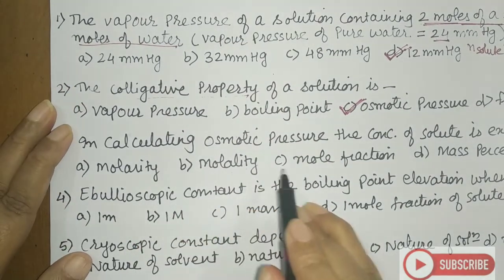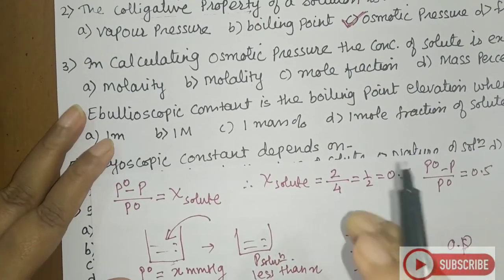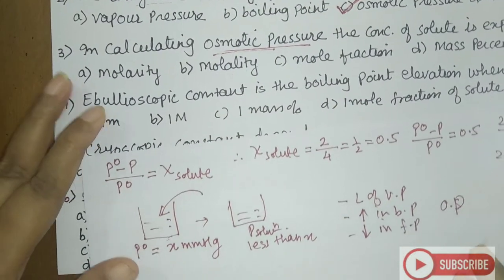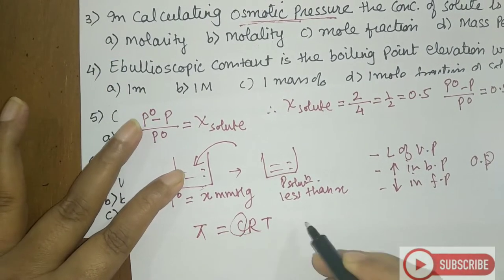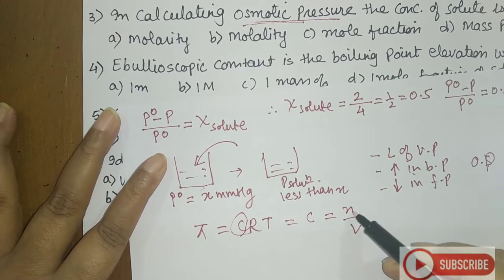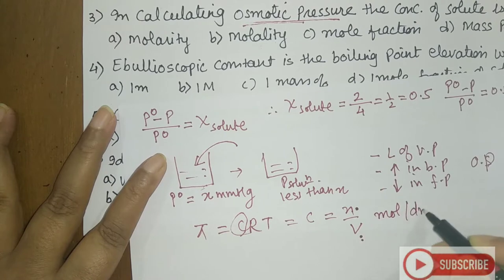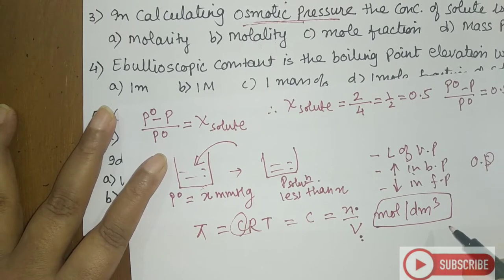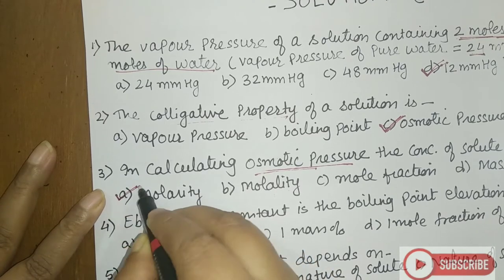Question 3: in calculating osmotic pressure, the concentration of solute is expressed in? The formula is π = CRT, where C = n/V, which is number of moles per unit volume — moles per dm³ or moles per litre. That is molarity. So the answer is molarity, which is the first option.